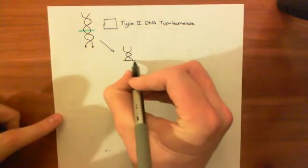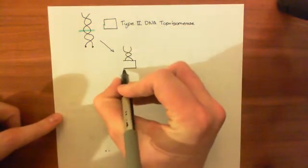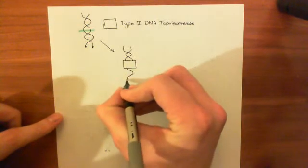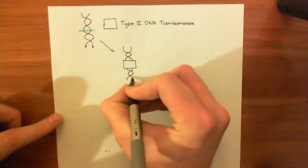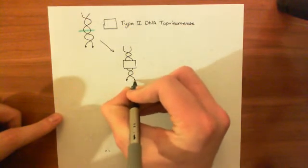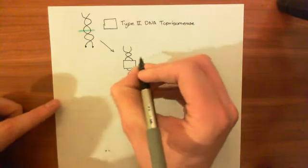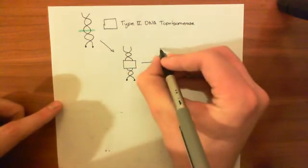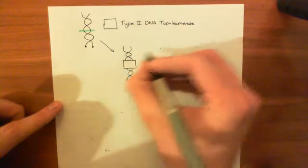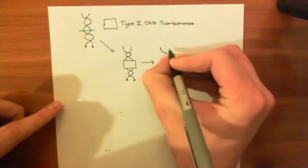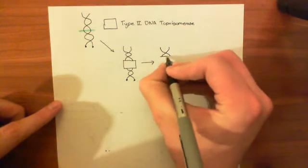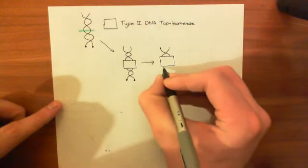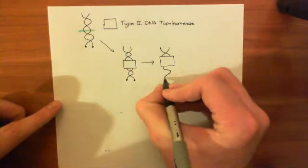It then forms a temporary complex with the DNA where it holds these two strands here, and then it holds the DNA below as well. And then what it does is it will undo a twist. So it will now undo a twist. So it twists around the enzyme, and below it's still the same.